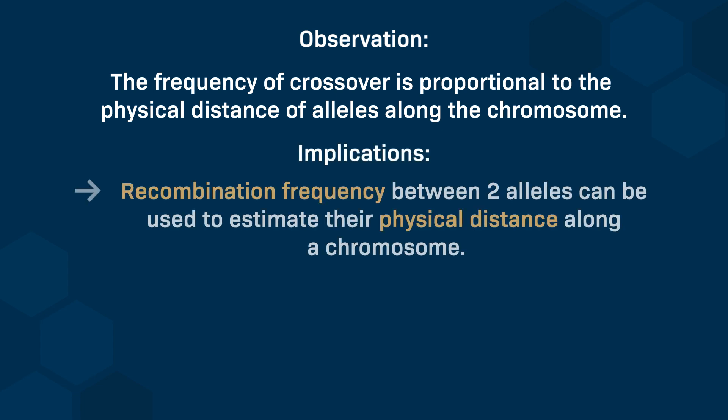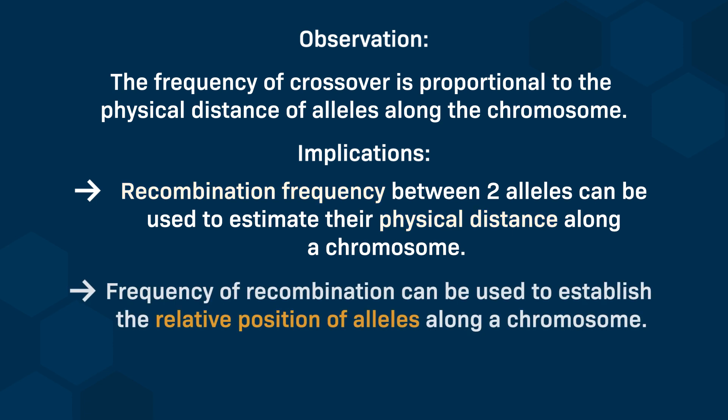The crossover frequency is proportional to the physical distance of alleles along the chromosome. This shows that the recombination frequency between two alleles can be used to estimate their physical distance along a chromosome. Knowing this, if we can determine the pairwise recombination frequency between a series of genes along the same chromosome, we can build genetic maps that show their relative positions. It's important to note that when genes are carried on the same chromosome but far apart, the frequency of recombination is relatively high and these genes will appear to segregate independently.